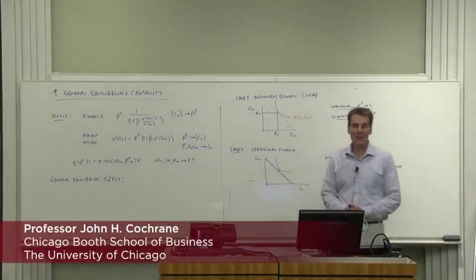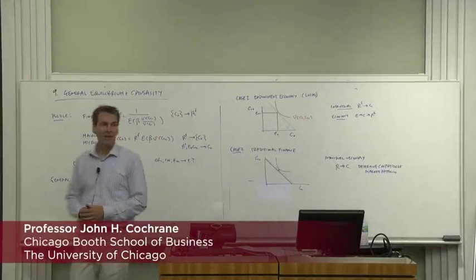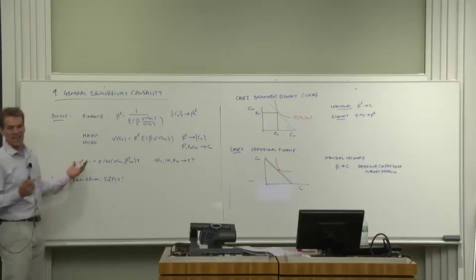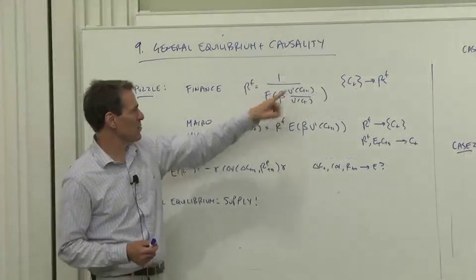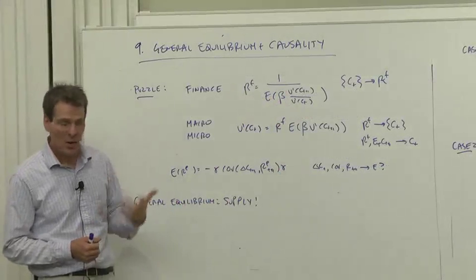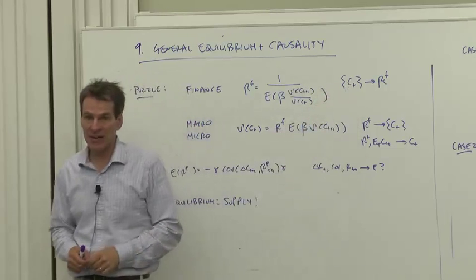So let's talk about general equilibrium and causality. What we've done here, the finance approach - let's look at just the case of the interest rate. Interest rate is 1 over expected discount factor. And we read this equation as: from the properties of consumption growth, this determines the interest rate.